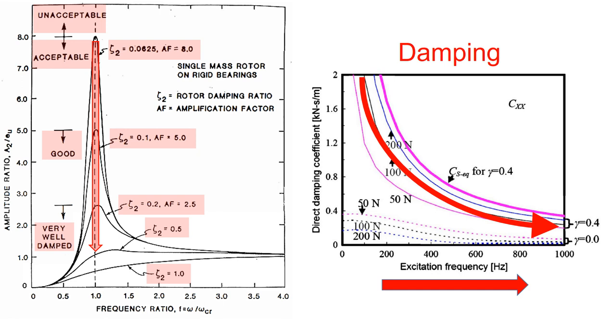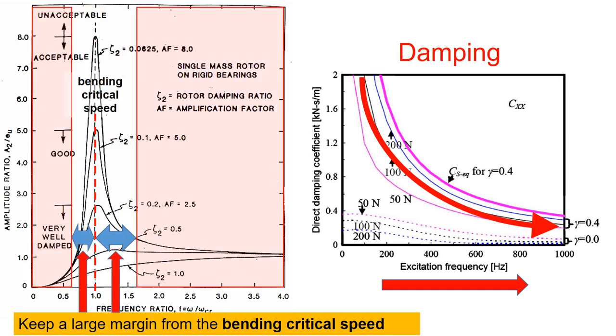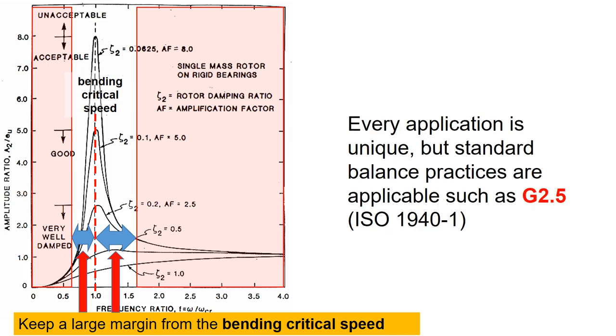So if the damping is small, do not continuously operate the machine near the bending critical speed. Also, make sure to balance the machine well to G2.5 level of balance.